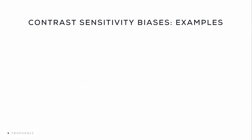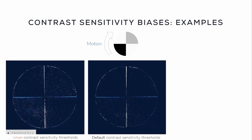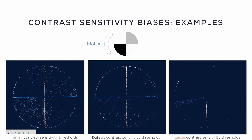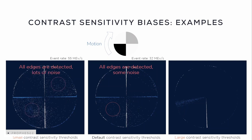Now we'll give some examples of adjusting contrast sensitivity biases. As our target object, we'll use a circular pattern with gray level segments, rotated clockwise at high speed. We'll show data acquired with three different settings: default, a low contrast sensitivity threshold, and a large contrast sensitivity threshold. Under default settings, the sensor detects all edges with all contrast changes. Using a small threshold makes the sensor very sensitive — edges are very clear but the sensor generates quite a lot of background noise. Using a large threshold makes the sensor far less sensitive — the sensor starts missing some edges, there is no background noise, the event rate is much lower, but pixel latency jitter is higher, making edges less clear.